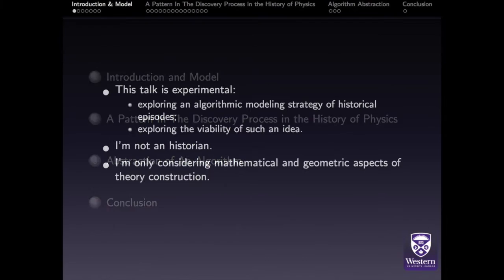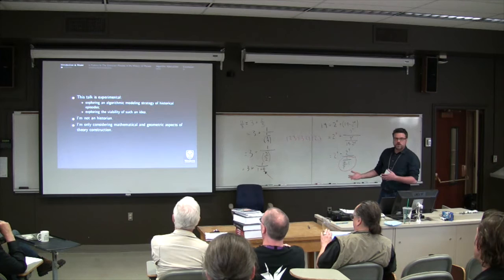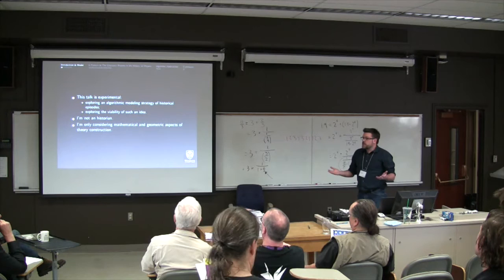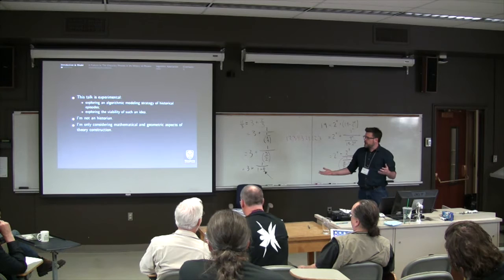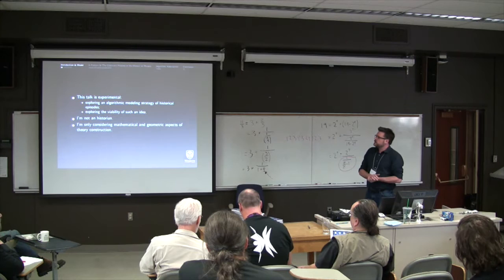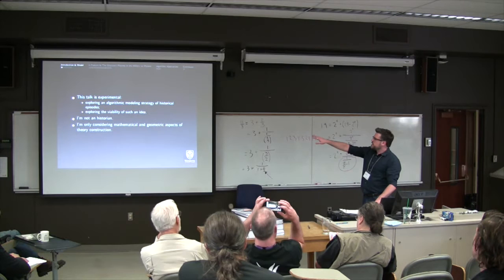So just to point out in general that this talk is experimental in at least a couple of ways. For the first time, I've never done this kind of thing before, but I'm just trying it out, exploring the public strategy of historical episodes. And so I'm just really exploring the viability of such an idea, an interesting thing. I'm not a historian, I'm a philosopher and applied mathematician, so I'm using the historical work by two people, Whittaker and Darrigol, and I'm pulling summaries of their stories about history and trying to model the reasoning process as a kind of an algorithm. And for simplicity, I'm focusing on the mathematical and geometric aspects of theory construction.